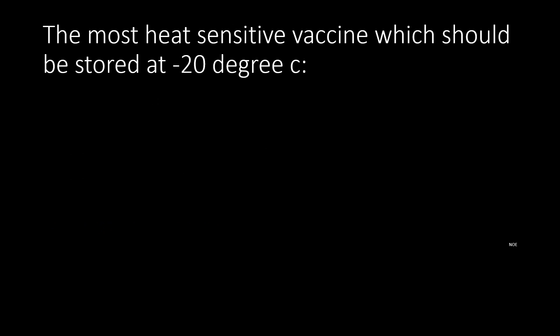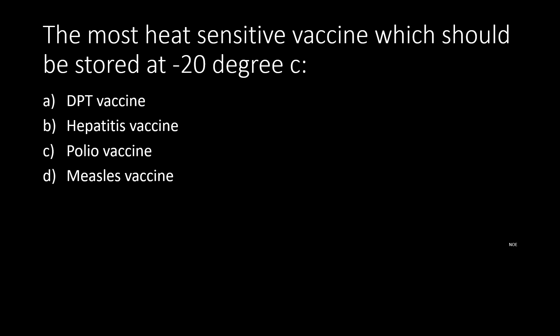The most heat-sensitive vaccine, which should be stored at -20 degrees Celsius: option A DPT vaccine, option B Hepatitis vaccine, option C Polio vaccine, option D Measles vaccine. The answer is polio vaccine. Note: Polio vaccine is the most sensitive to heat, while tetanus toxoid is the least sensitive.